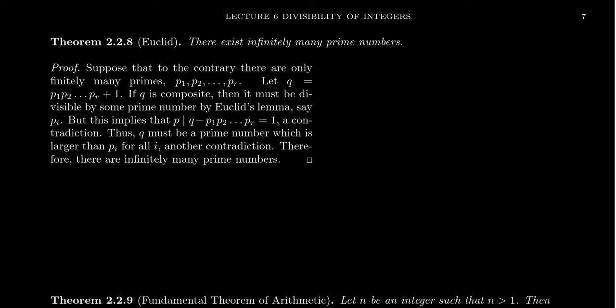This number is clearly bigger than every prime number, so it must be composite because we've exhausted all possibilities. It has to be divisible by some prime number, which we call pi.